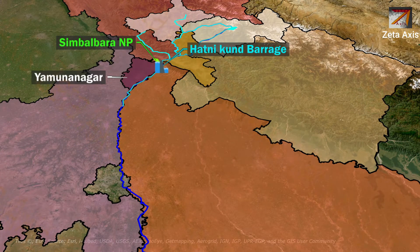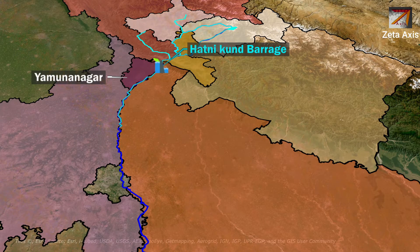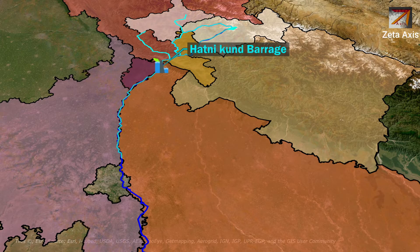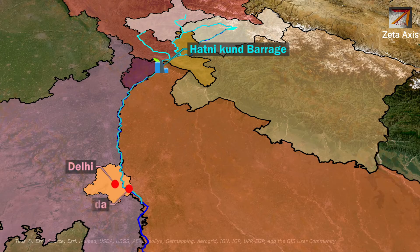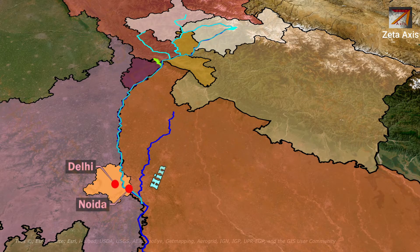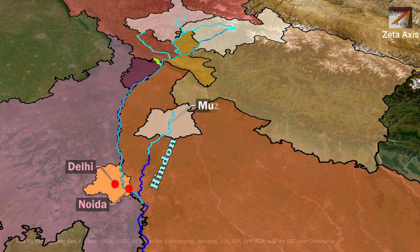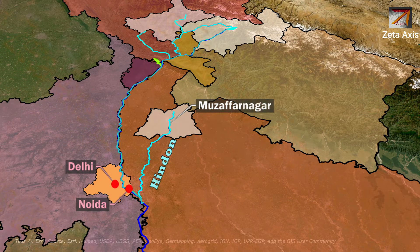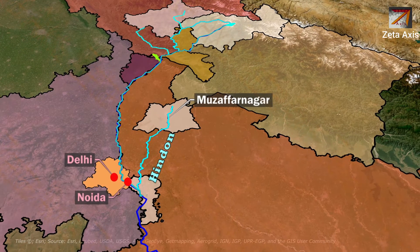In Yamunanagar, the Yamuna forms a boundary between Haryana and Uttar Pradesh. The Yamuna river flows along the boundary of Haryana and UP and reaches Delhi. Then it passes through Noida where the Hinden river meets the Yamuna river. The Hinden river originates in the Siwaliks in Muzaffarnagar district and flows for 400 km between the Ganga and Yamuna to join the Yamuna river in Noida.